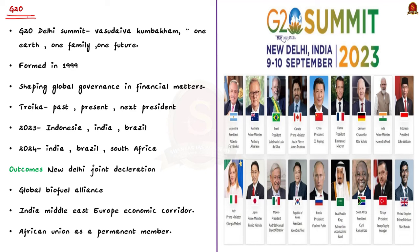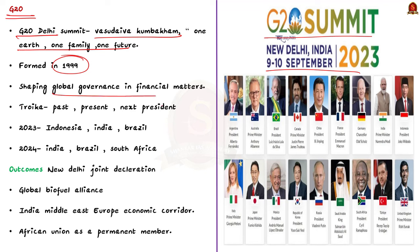Our next topic is G20. Recently India held the presidency of the G20 summit held in New Delhi with the theme 'Vasudhaiva Kutumbakam' or 'One Earth, One Family, One Future', making G20 a very crucial topic for prelims 2024. G20 was founded in 1999 following the Asian financial crisis as a forum for finance ministers and central bank governors to discuss global economic and financial issues. Its membership includes 19 countries and the European Union. India has been a founding member of G20.